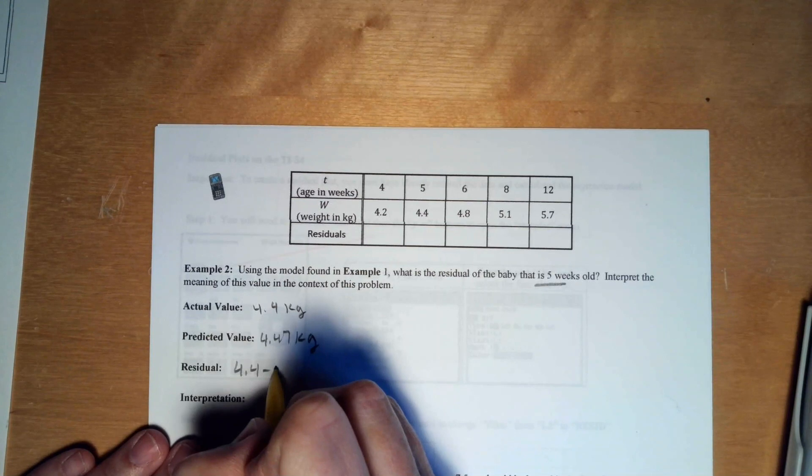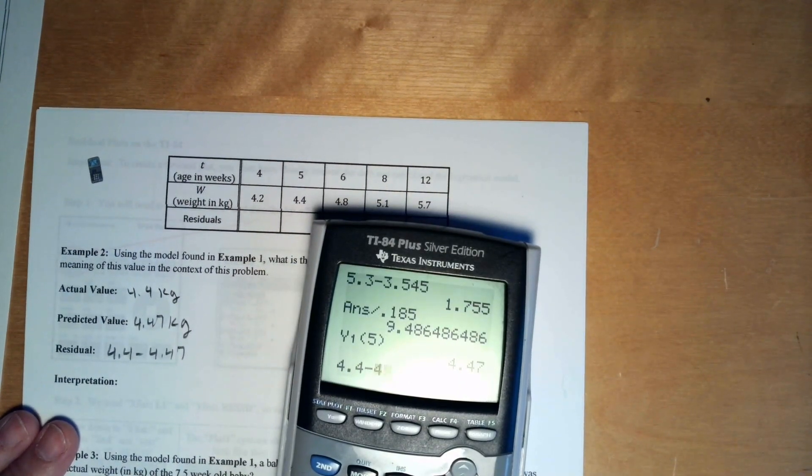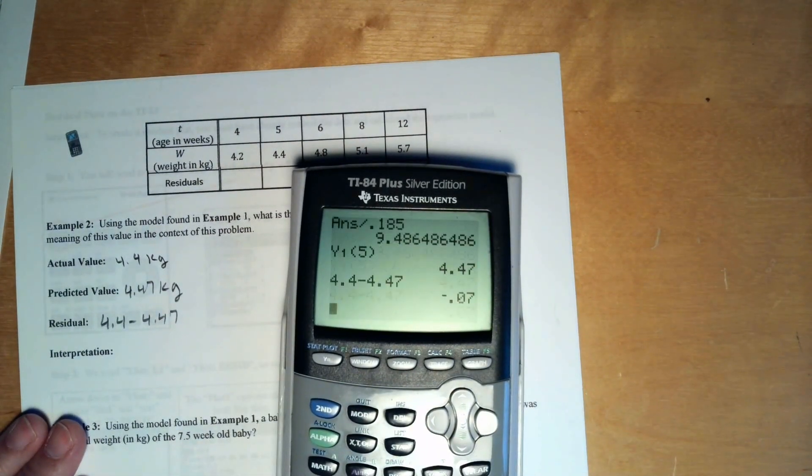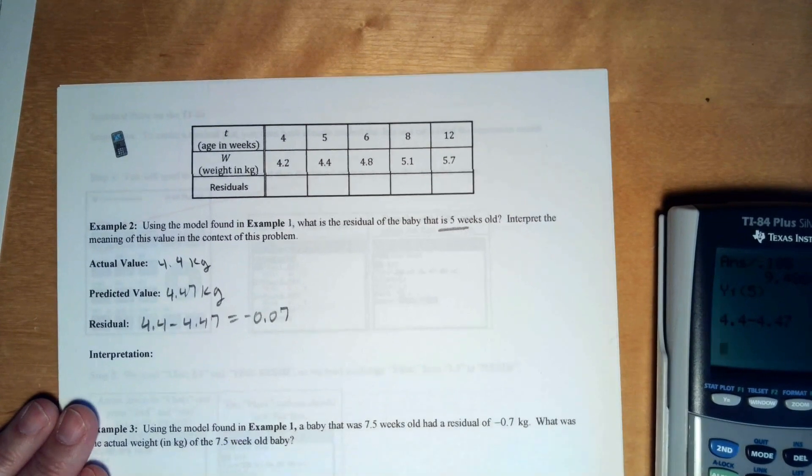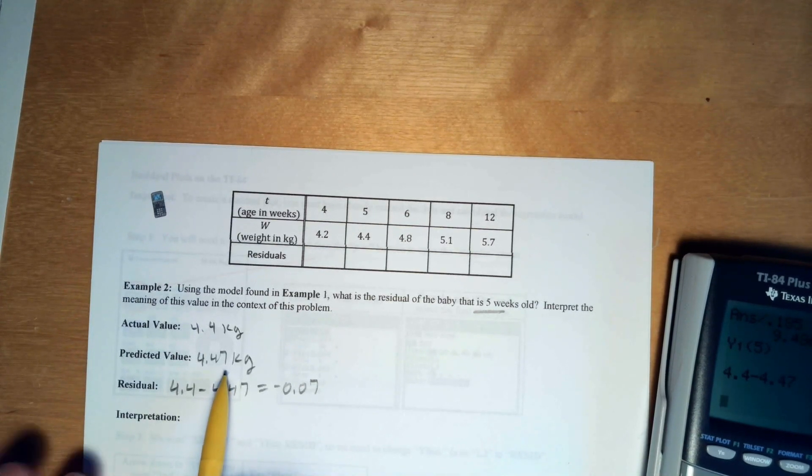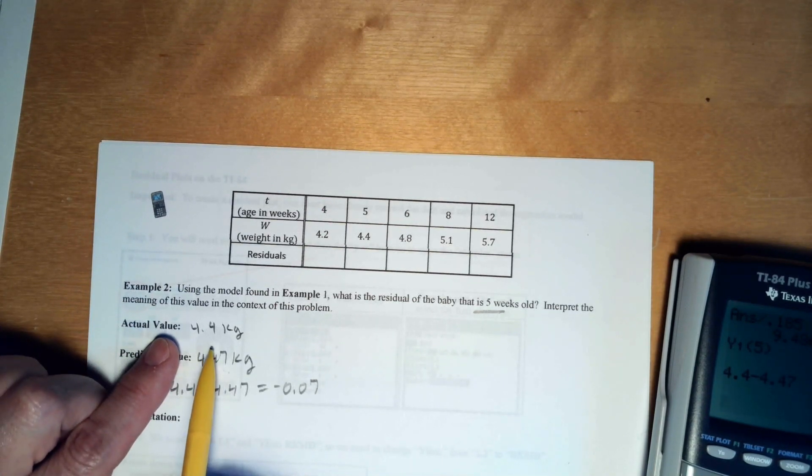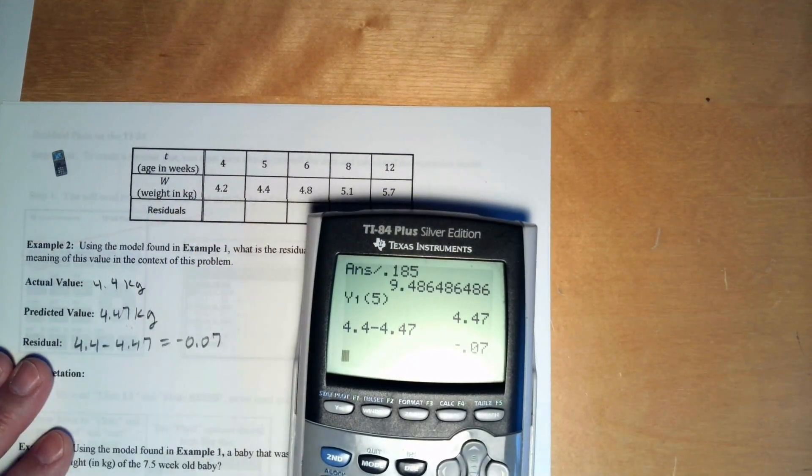So I take my actual value, so 4.4 minus 4.47. You can do it on here, 4.4 minus 4.47, but you can obviously the .07 is what's different by, right? And it's negative .07. So what that tells me is that this was a little bit higher. So I was a little bit over. Like so my predicted value was a little bit over what my actual value was.